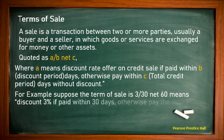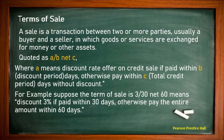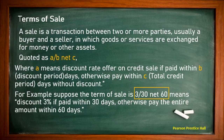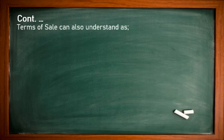For example, suppose the term of sale is 3/30 net 60. This means the discount rate is 3%. If the customer returns the company's money within 30 days, they will get a 3% discount. Otherwise, they must pay the entire amount within 60 days. So 3 means the percentage, 30 means the days to get the discount, and net 60 means the full payment is due within 60 days.